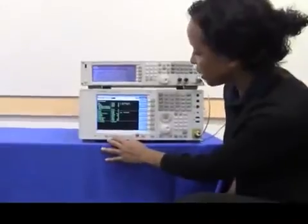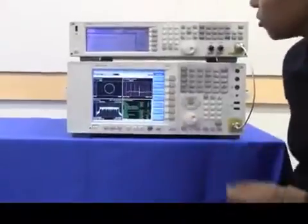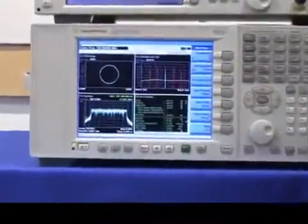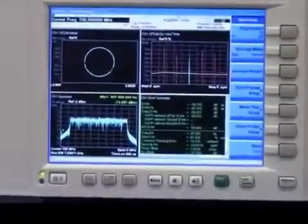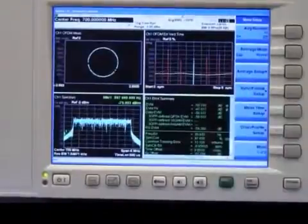I'm going to zoom out of the error summary trace and go back to the default trace, which is showing you four different traces, including the constellation diagram. Here, we're looking at EVM across different symbols, spectrum, and then the error summary.